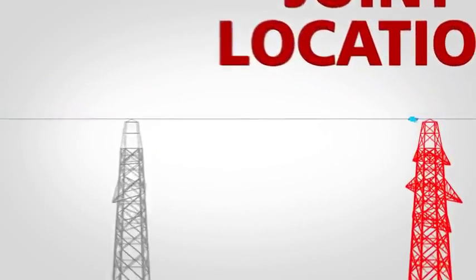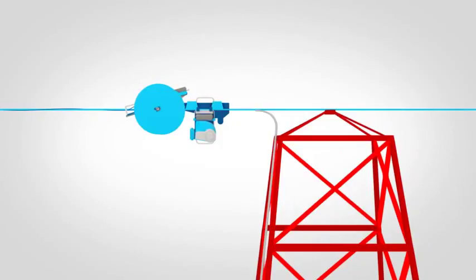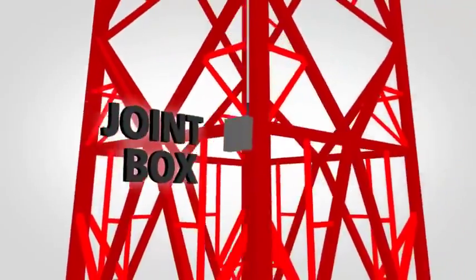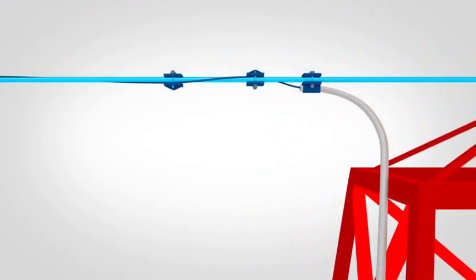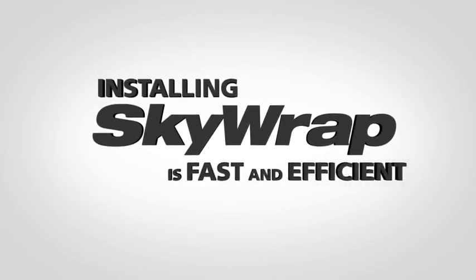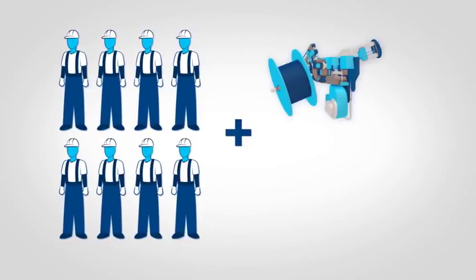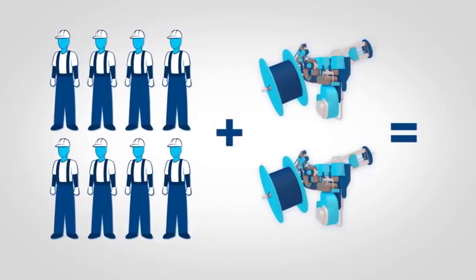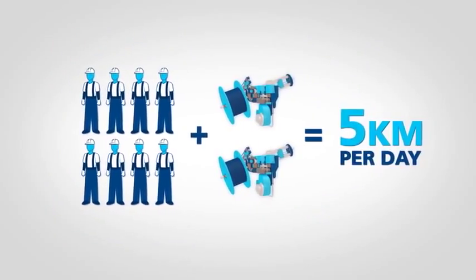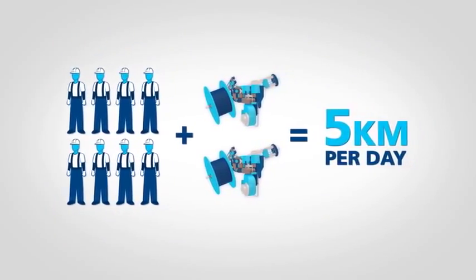Once the final joint location is reached, the remaining cable is clamped securely to the conductor and fed through a conduit that leads down the tower to a joint box. The upper end of the conduit is attached directly to the conductor, ensuring the Skywrap cable is completely protected. Installing Skywrap is fast and efficient. Eight linesmen and a pair of wrapping machines can cover distances of up to five kilometers per day, minimizing your investment.